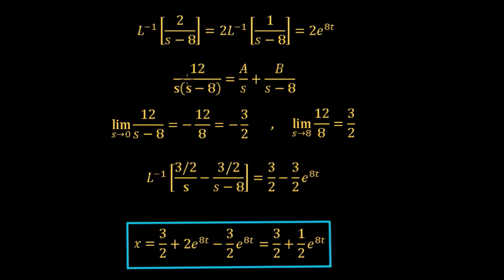The second term is 12/[s(s-8)]. Using partial fraction expansion, that equals a/s plus b/(s-8). Using the cover-up rule: covering up s and taking the limit as s tends to 0 gives 12/(0-8) = -3/2, so a = -3/2. Covering up (s-8) and taking the limit as s tends to 8 gives 12/8 = 3/2, so b = 3/2.